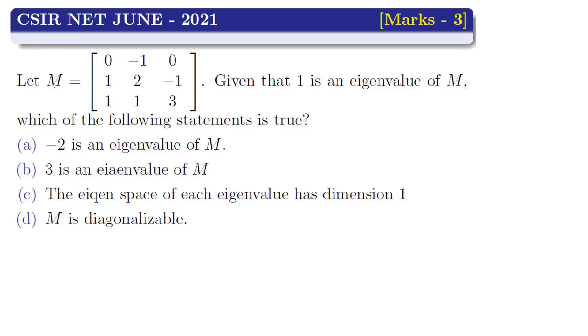Now the question is: let M be a 3×3 matrix with elements 0, -1, 0, 1, 2, -1, 1, 1, 3. Given that 1 is an eigenvalue of M, which of the following statements is true?